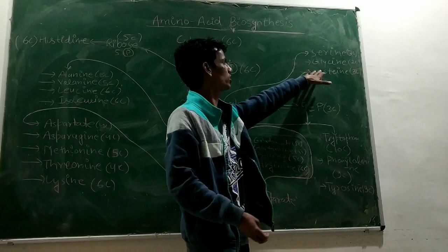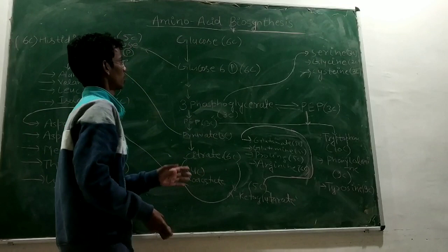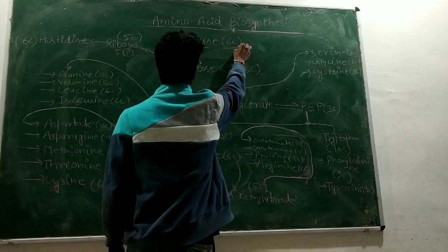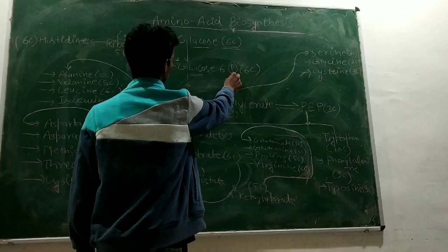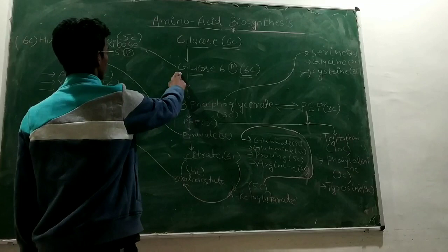We start with glucose, using a carbon-containing compound. Glucose is a 6-carbon containing compound.